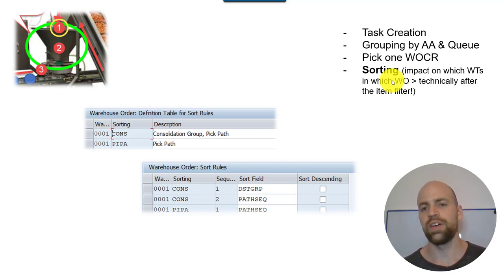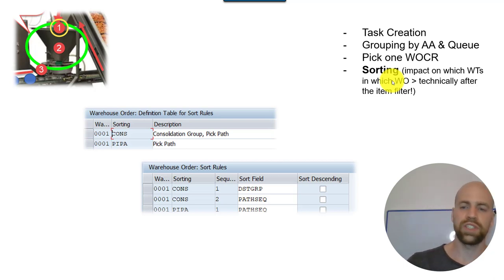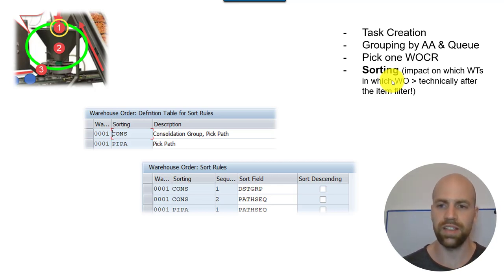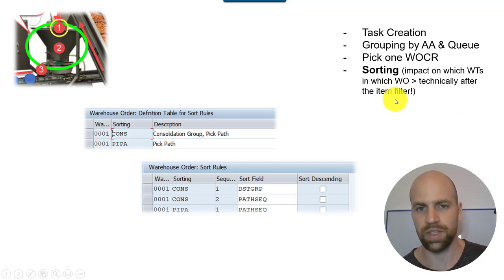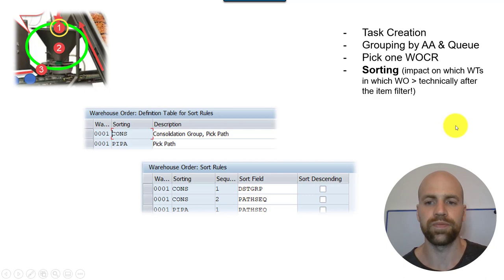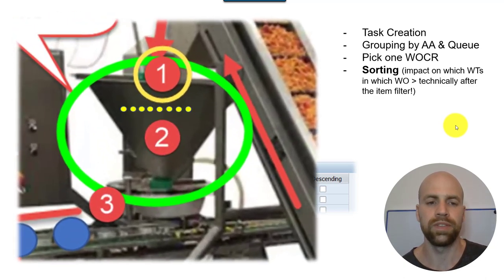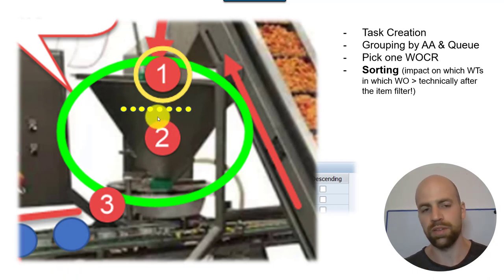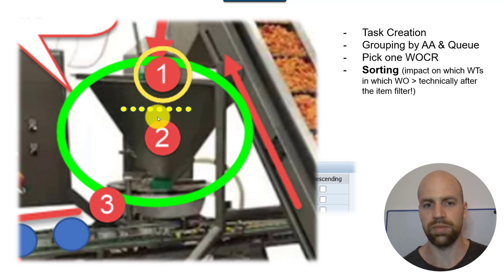This sorting has a direct impact on which warehouse tasks will later be in one warehouse order. Technically, this happens after the item filters — we will come to those in the next step — but logically it is easier to understand if we say we sort at the beginning. The tasks are brought into a sequence based on, for example, weight, picking sequence, or quantity — whatever is useful in your context.